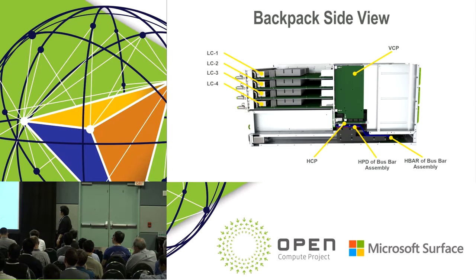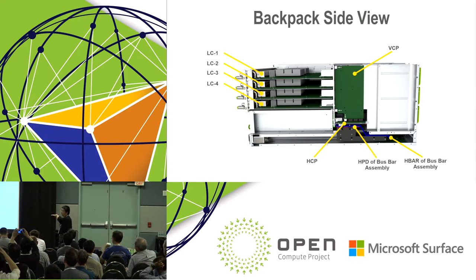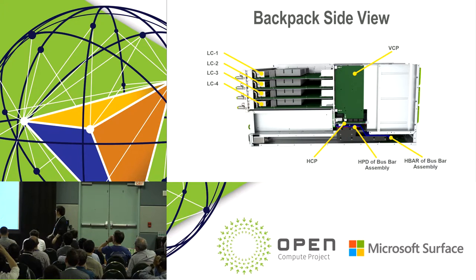This is the cross-sectional side view. You can see four line cards plugging into the chassis horizontally and four fabric cards on the rear side — they are orthogonal. On the bottom side is the bus bar.